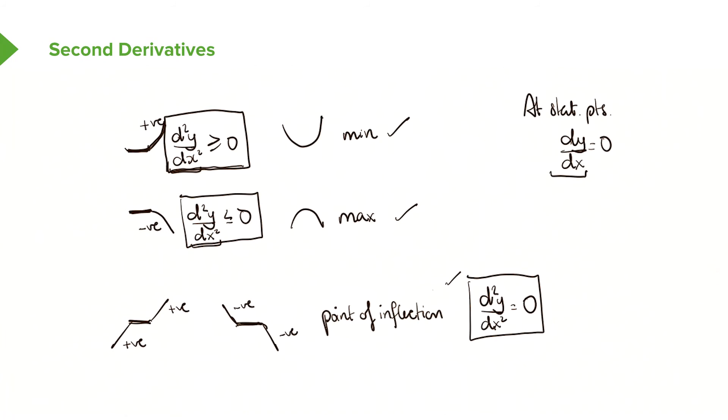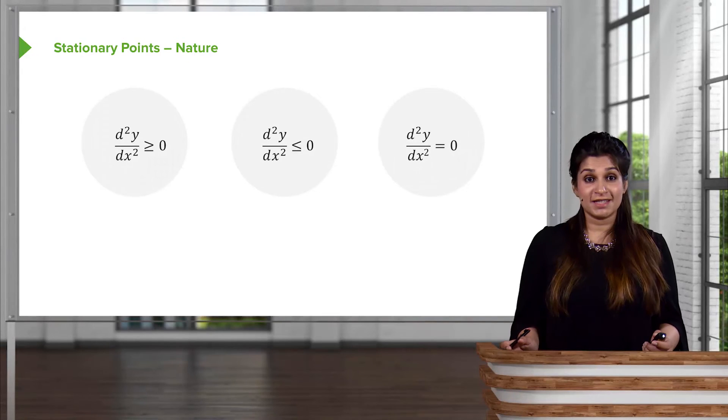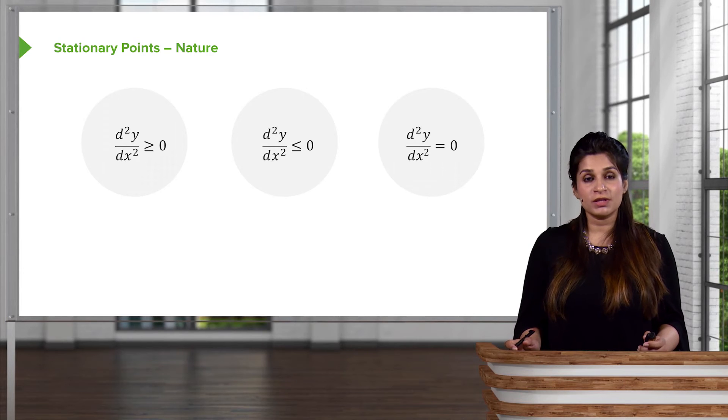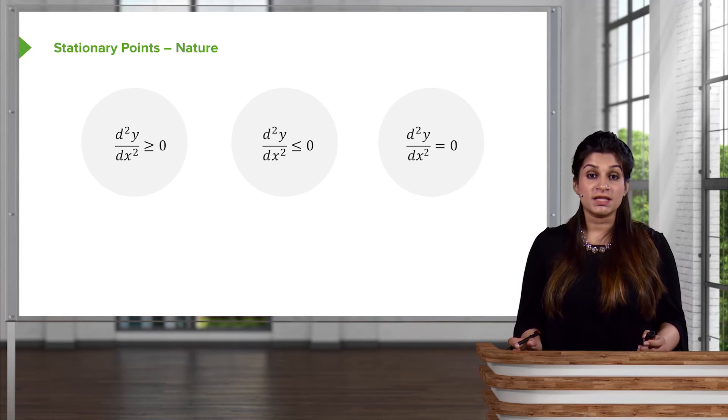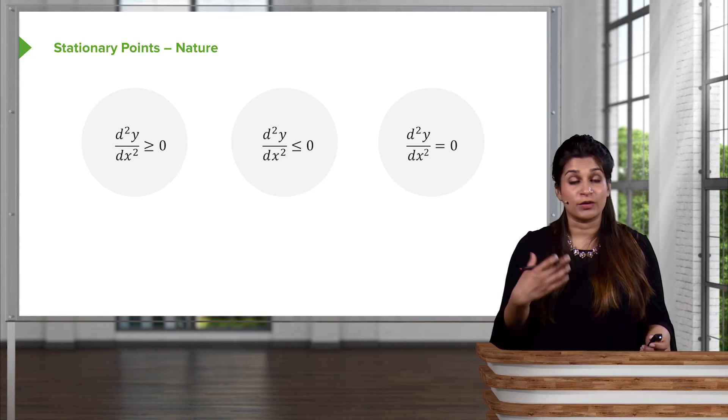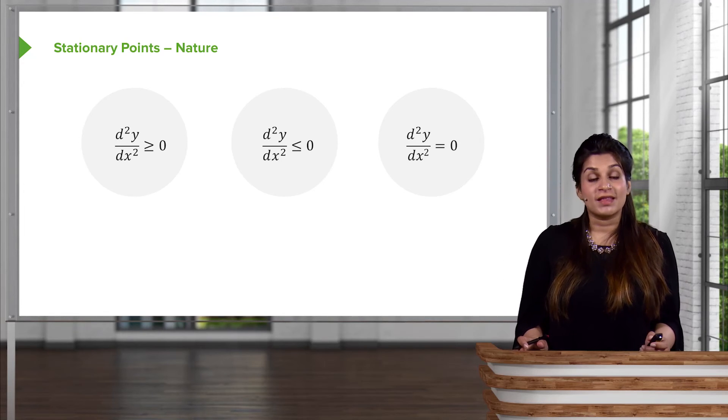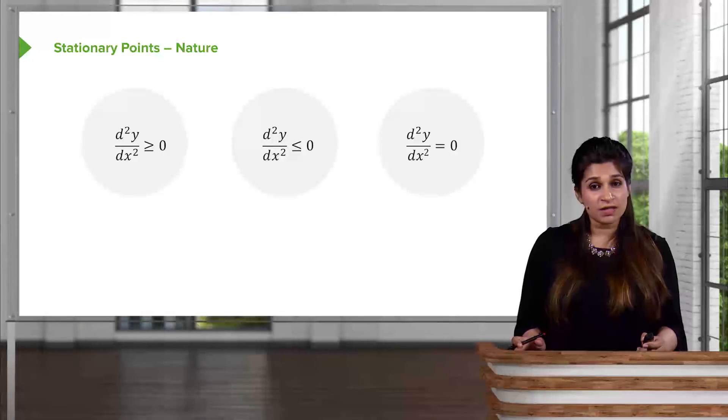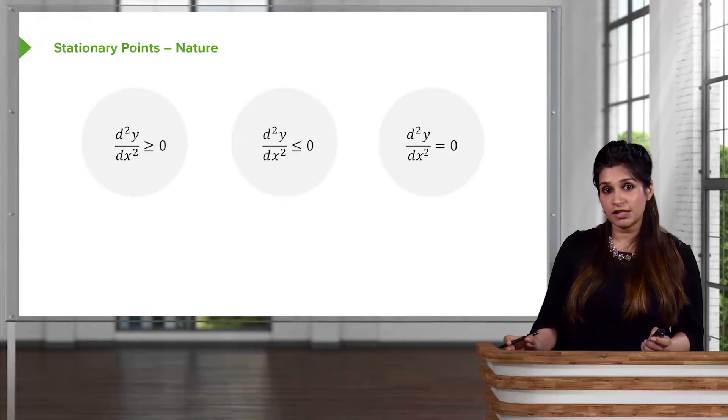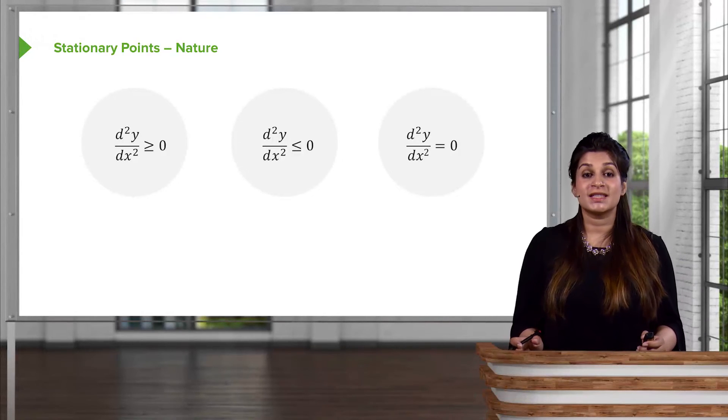And I'll show you how that's done in an example. So just to summarize, stationary points can be found by doing dy/dx equals zero. You'll see that we'll do so much of this, that this will just be something that you'll manage to learn. But the second part of it, which is important, is finding out the nature of the stationary points, what type of stationary point this is. We use the second differential.